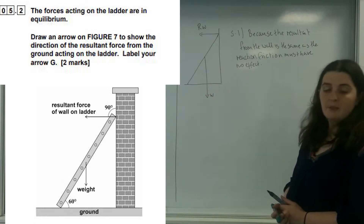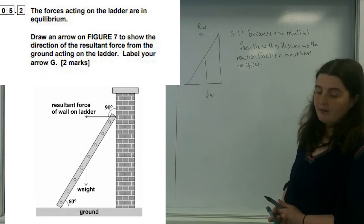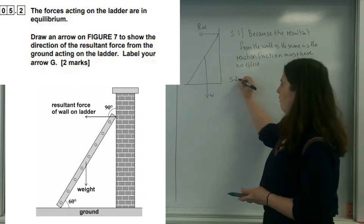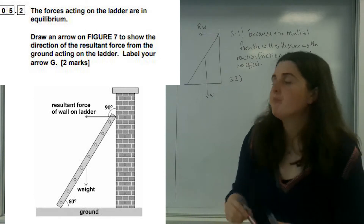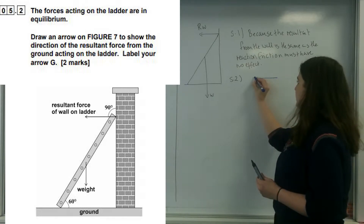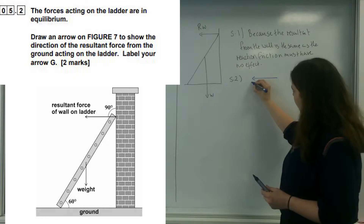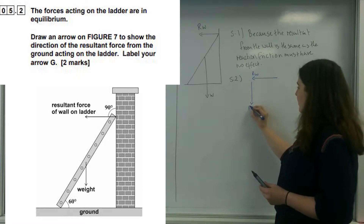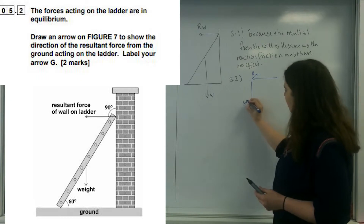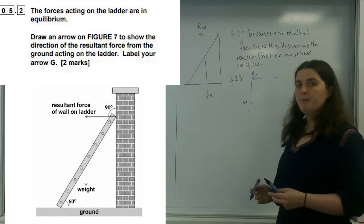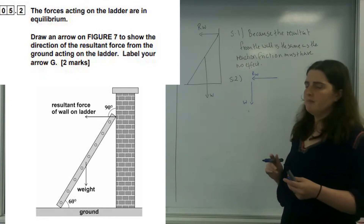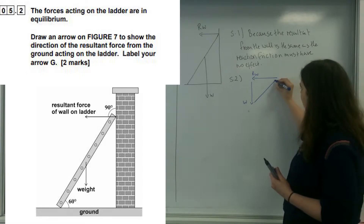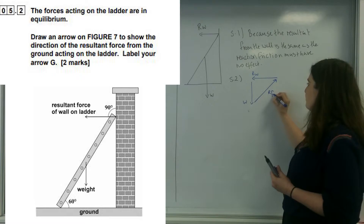Now if this is in equilibrium, I have got a resultant force going in this direction, and I've also got my weight acting down. This is the force from the wall and this is my weight. Which means to be in equilibrium, this vector diagram must be complete — it must go back on itself. So this must be the resultant from the floor.